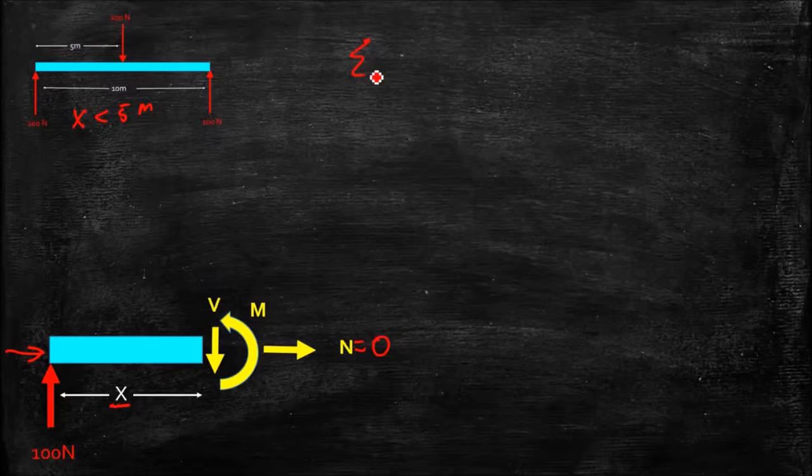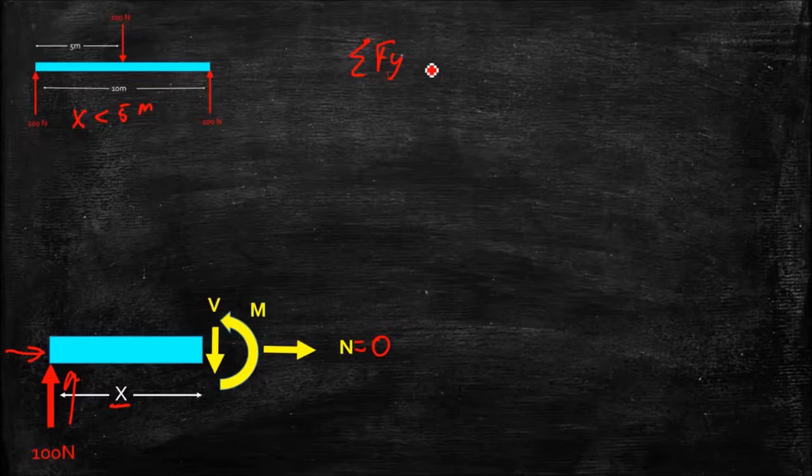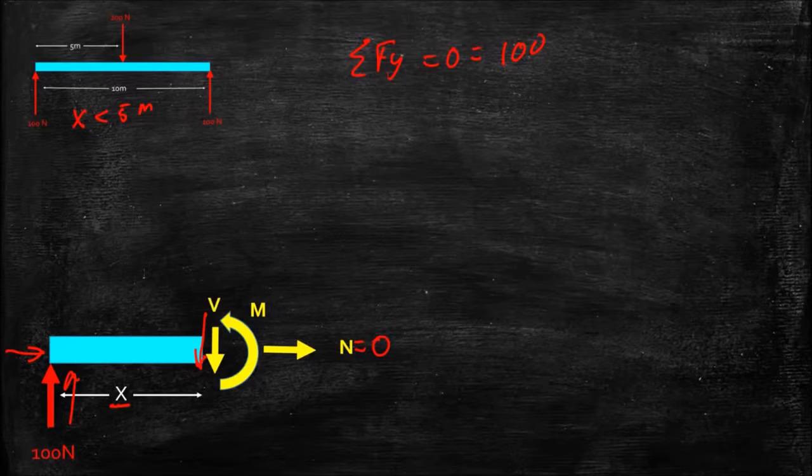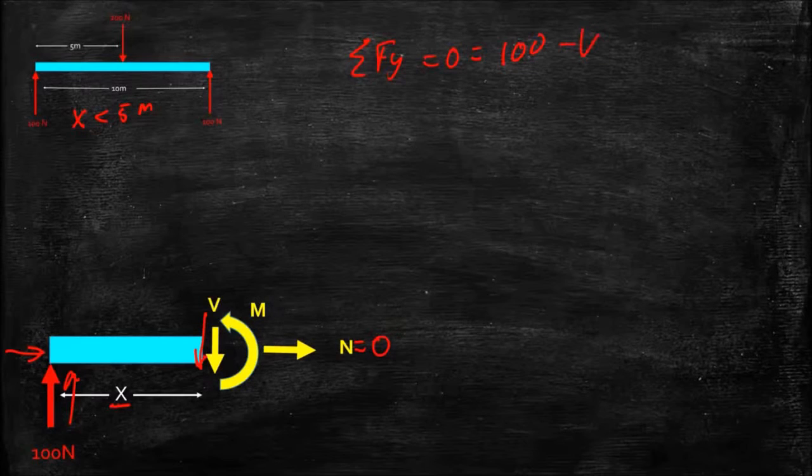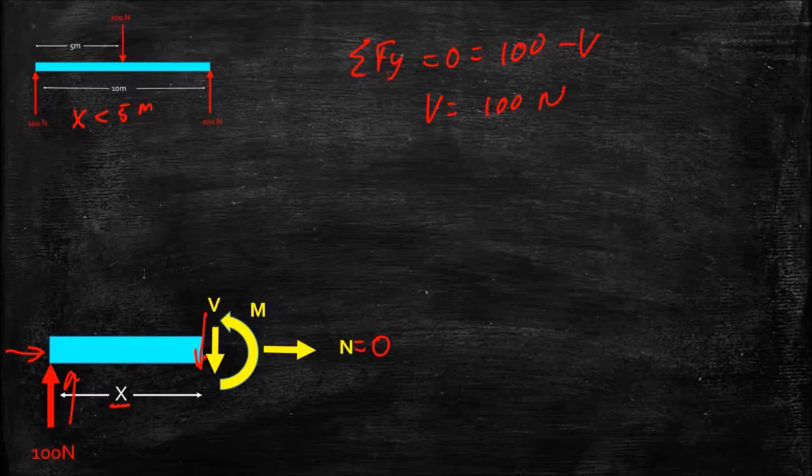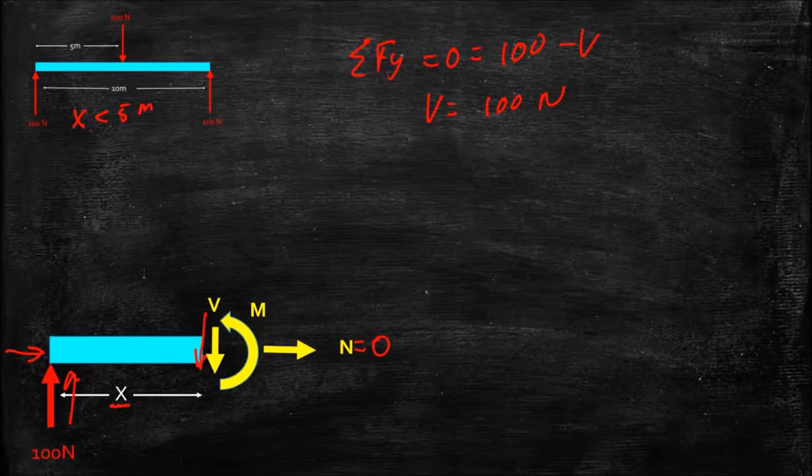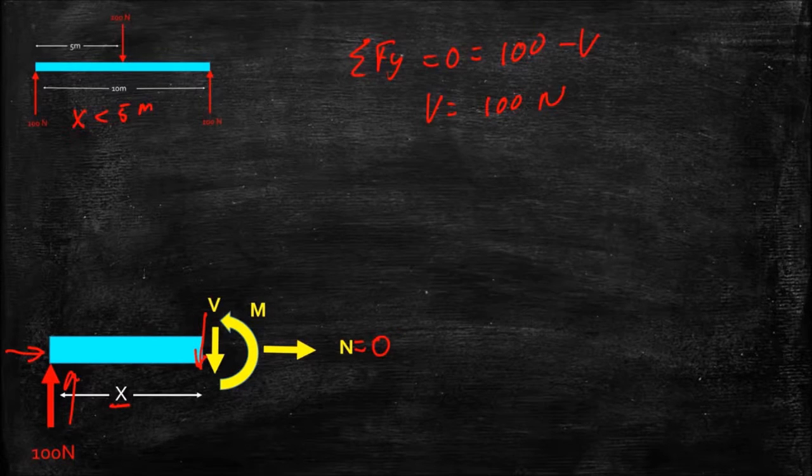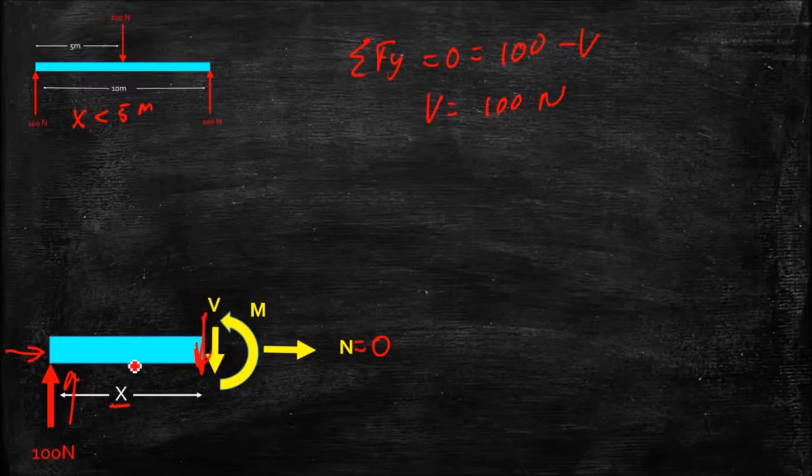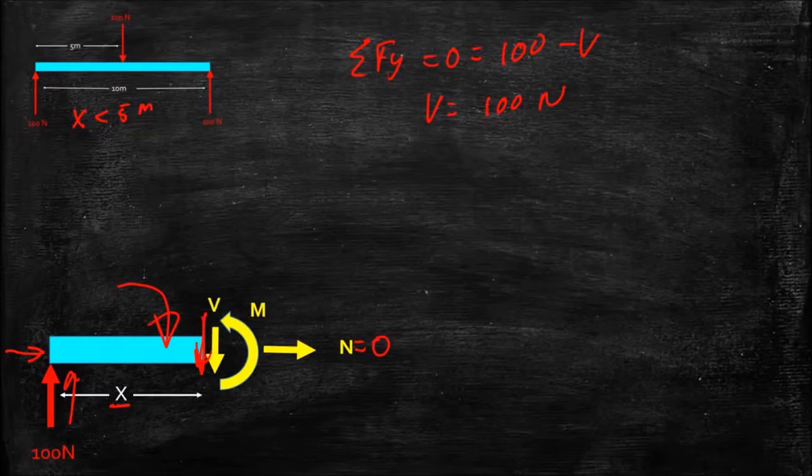If I do the sum of the forces in the y direction, I get my 100 newton force up. I'm assuming there is a shear force acting downward. If I solve for my shear force, I get V equals 100 newtons downward in the way that I've drawn it. If we think of our sign convention, positive shear force results in a rotation clockwise, this downward force is going to tend to cause that beam to rotate clockwise, so that is indeed a positive shear force.